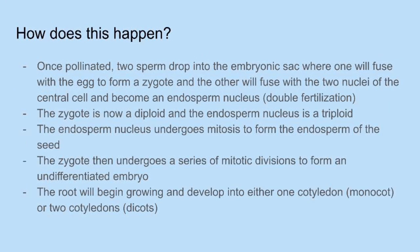How does this happen? Once pollinated, two sperms drop into the embryonic sac, where one will fuse with the egg to form a zygote, and the other will fuse with the two nuclei of the central cell and become an endosperm nucleus — double fertilization. The zygote is now diploid and the endosperm nucleus is triploid. The endosperm nucleus undergoes mitosis to form the endosperm of the seed. The zygote then undergoes a series of mitotic divisions to form a fully developed embryo, and the root will begin to grow and develop into either a monocot or two-cotyledon dicot.